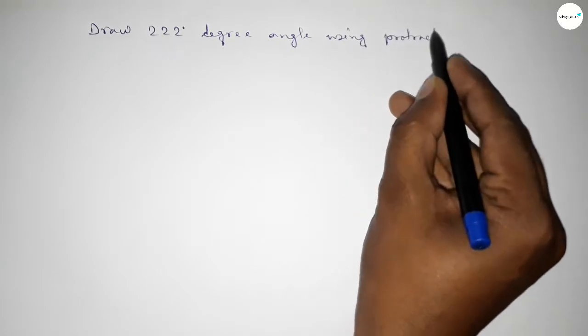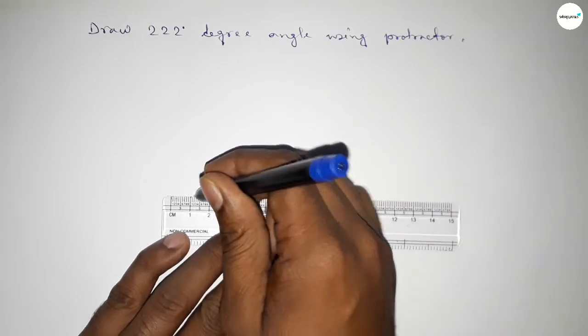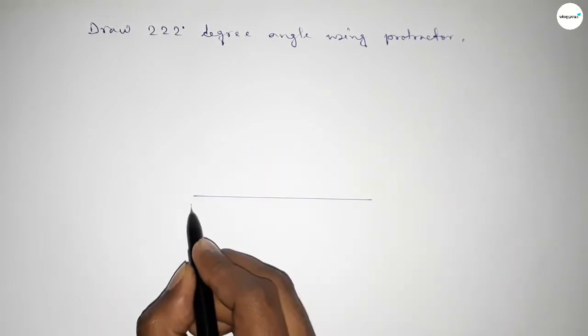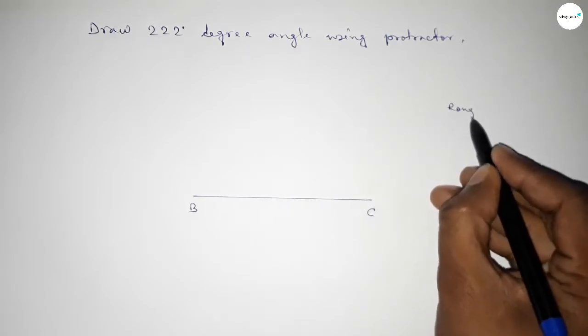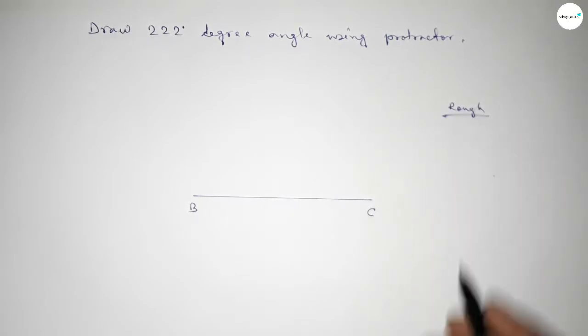So let's start the video. First of all, we have to draw here a straight line of any length, taking here point B and here point C. Now roughly discussing some calculation here, so if we add 42 degree angle with 180 degree, then we can get 222.